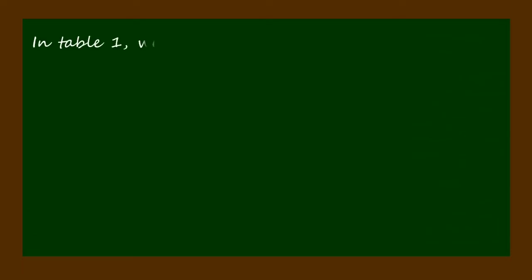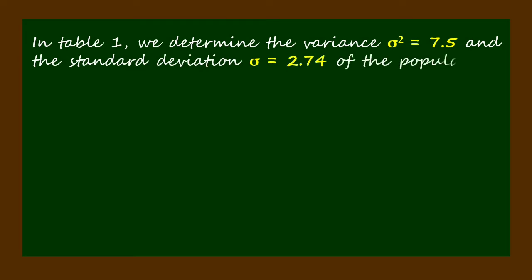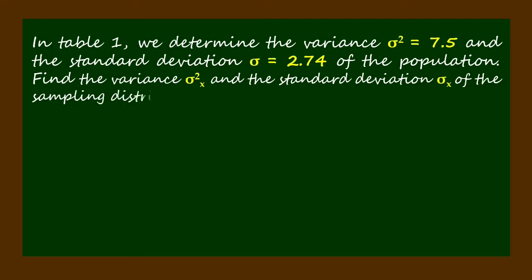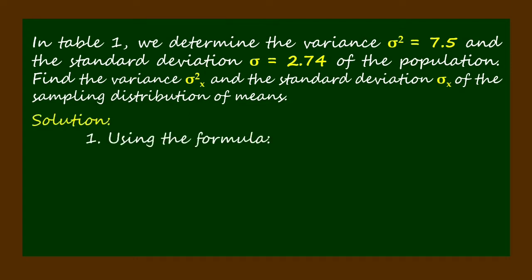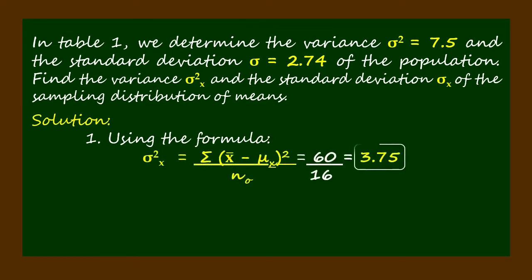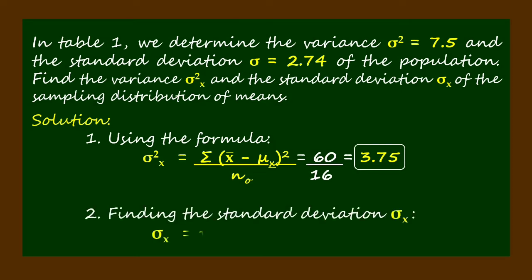In Table 1, we determined the variance sigma squared equals 7.5 and the standard deviation sigma equals 2.74 of the population. Now let's find the variance sigma squared sub x and the standard deviation sigma sub x of the sampling distribution of means. The variance sigma squared sub x is 60 divided by 16, which equals 3.75. The standard deviation sigma sub x is the square root of 3.75, which equals 1.94.